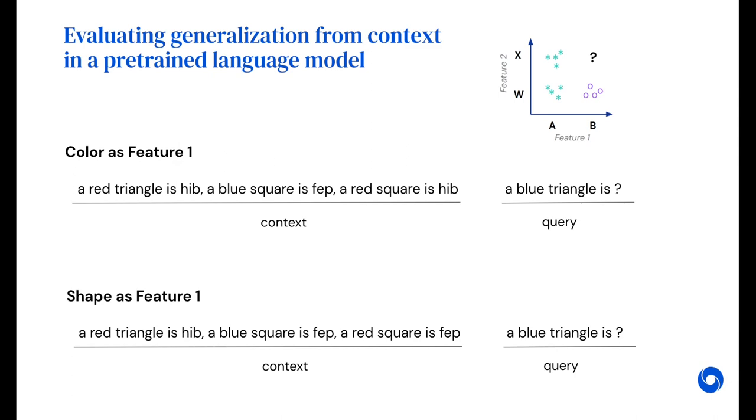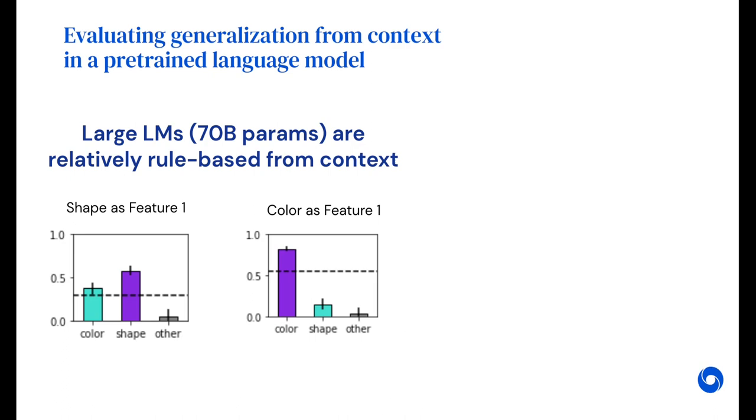After correcting for baseline biases, we find that language models are relatively rule-based from context. This is a departure from the neutrally trained transformer. One possible explanation is that natural language data, maybe because it's combinatorial, provides a strong learning pressure towards rule-like generalization.